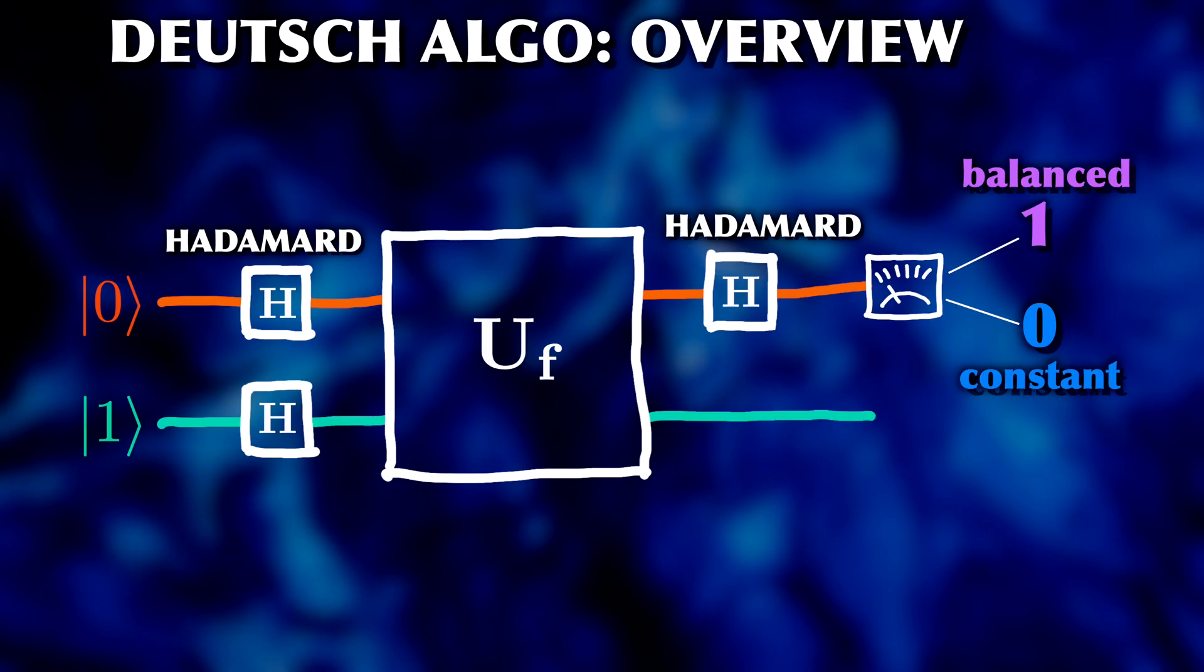Everything we did, from which states the qubits are initially in, the Hadamard transforms, the exact construction of Uf, number and role of qubits, everything was carefully designed to solve the problem at hand.